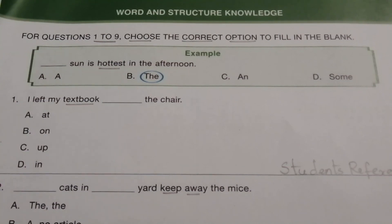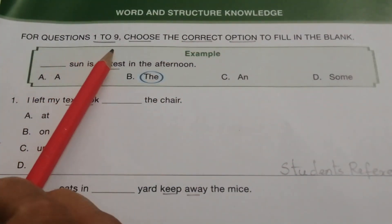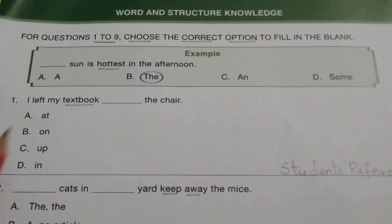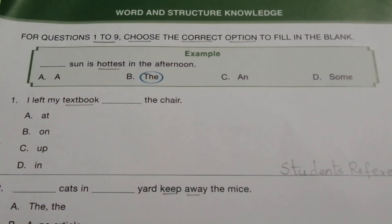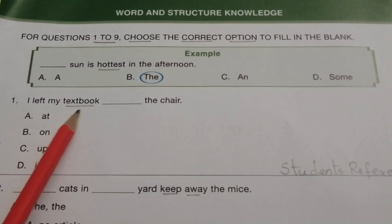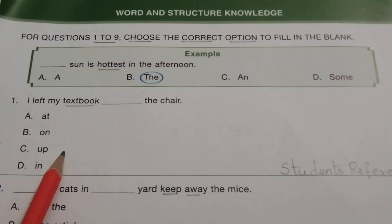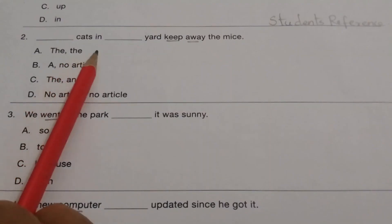The first topic is Word and Structure Knowledge for questions 1 to 9 — choose the correct option to fill in the blank. Example: 'The Sun is hottest in the afternoon.' Question 1: 'I left my textbook dash the chair.' The options are at, on, up, in. The answer is B — on. 'I left my textbook on the chair.'